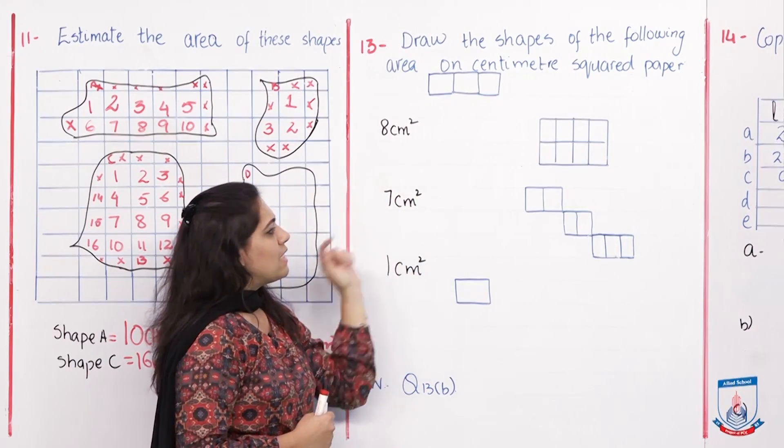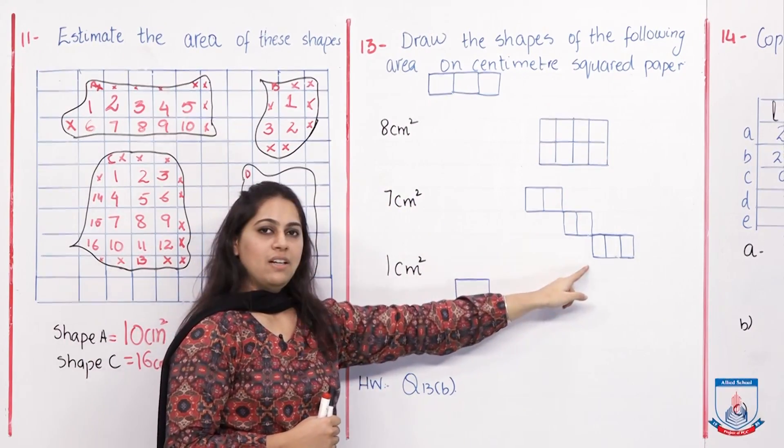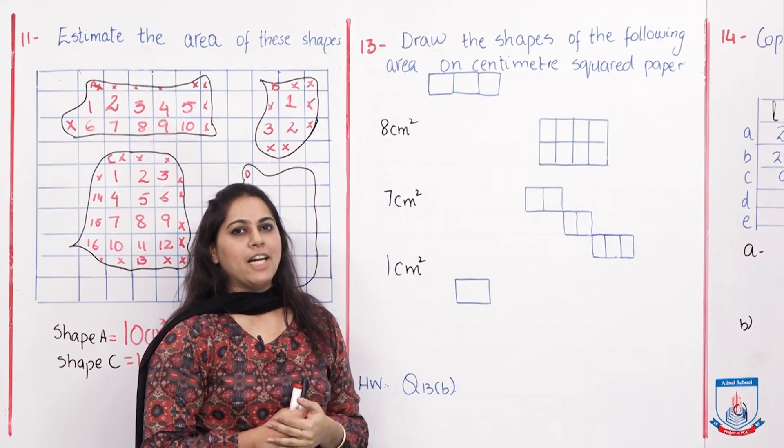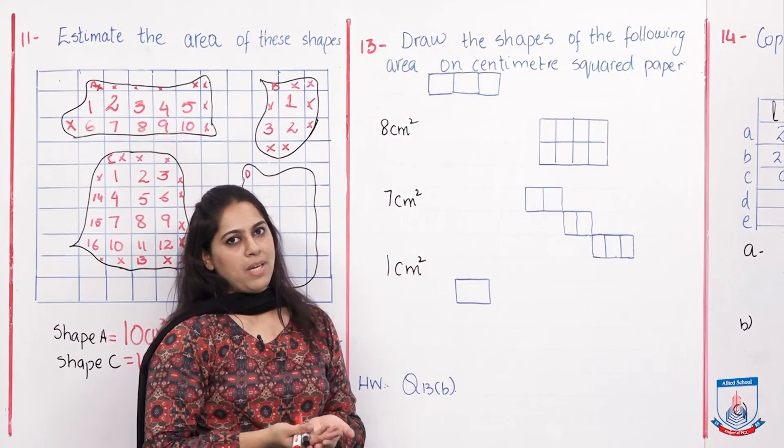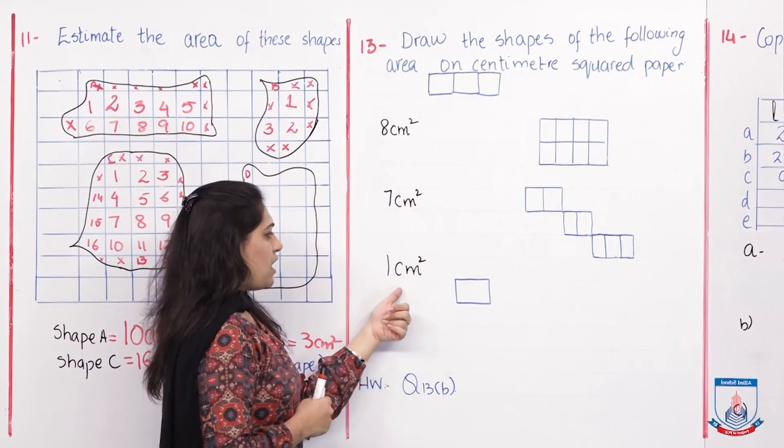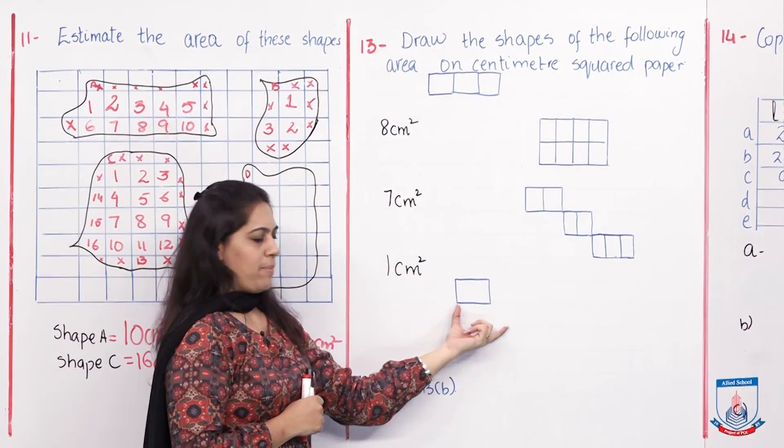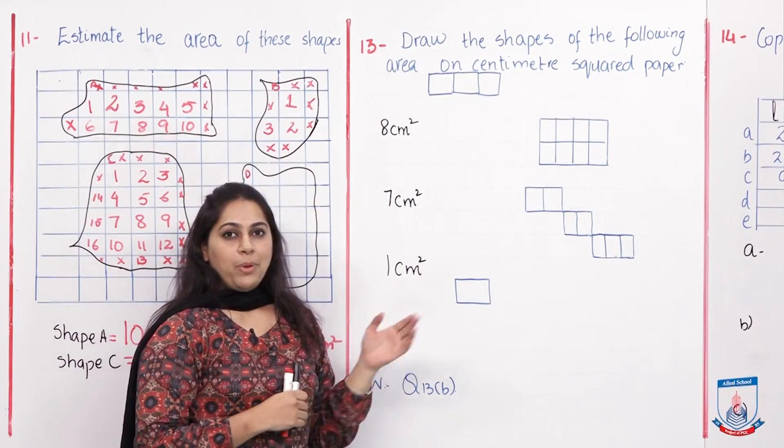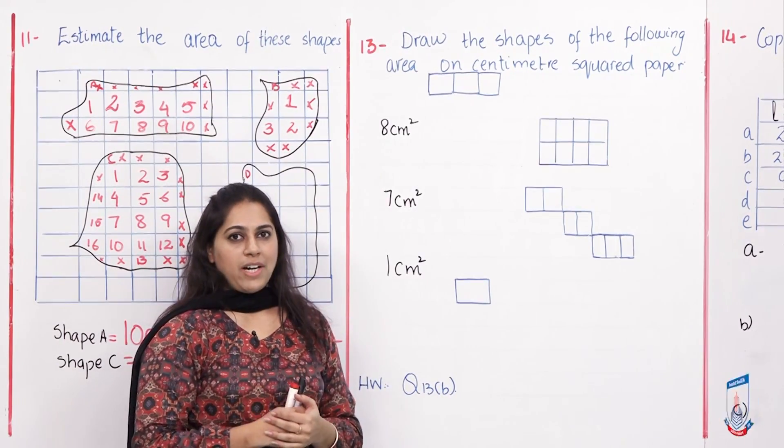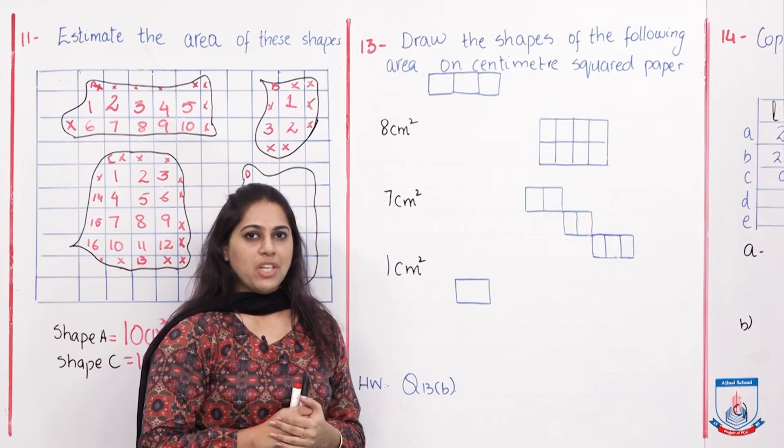Now 7 centimeter square, I made this shape with the help of a ruler. One centimeter is just a small square, you can see, and I made this shape. I hope this will be easy to draw to find out the area of different shapes.